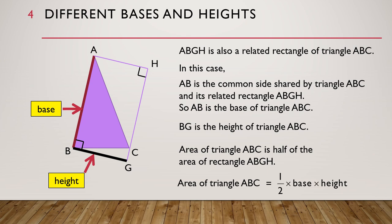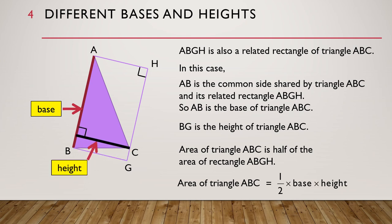Sometimes the height of the triangle may not be shown like this. Instead, it may be shown as this line. So this line IC is also the height of triangle ABC, and we can use IC to find the area of triangle ABC.